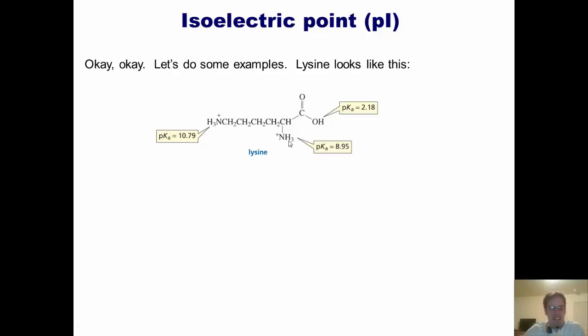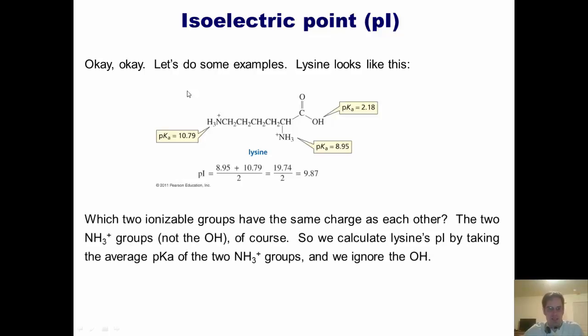So how do we calculate lysine's pI? We take the average pKa value of the two NH3+ groups, that is, the two groups that have the same charge as each other, and we completely ignore the OH. So let's see if we can do that. Here, we've got the pKa value of this NH3+ and the pKa value of this NH3+. We need to calculate the average. We just add them both together, giving us 19.74, and divide them by two. That gives us 9.87.